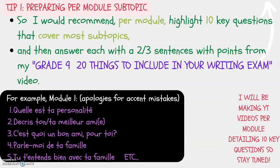Tip 1: Preparing per module subtopic. I would recommend per module highlighting 10 key questions that cover most subtopics, then answer with a 2 to 3 sentence structure, using points from my grade 9 writing exam video which has a whole list of things to include for full marks. For example, for module 1 I've given you 5 questions — you just need 5 more. Answer them in 2 to 3 sentences and make sure they're really high quality.